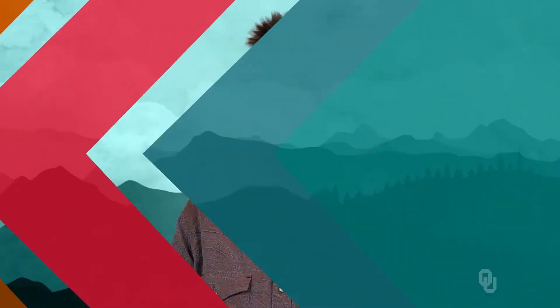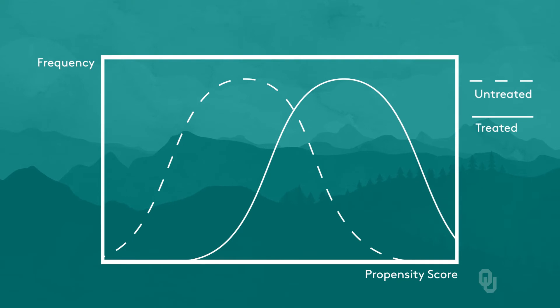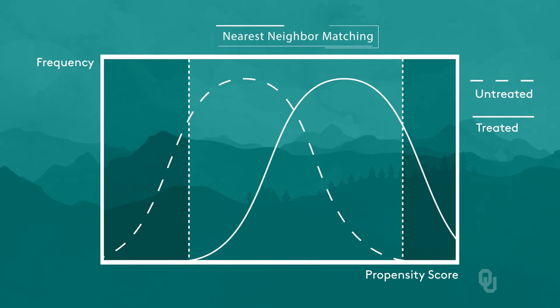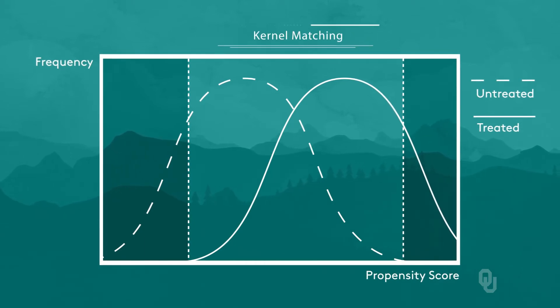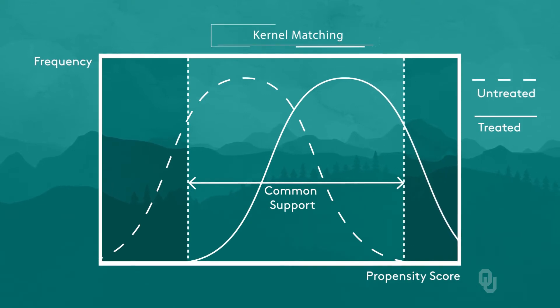We also need a method to determine the specific unit or units to match with each treated unit. Once the first-stage probability of policy adoption equation is estimated, to ensure that we get good matches, we restrict our analysis to the region of common support. By that I mean, if we graph the distributions of propensity scores for the treated and untreated units, we only use matching in the area where the two distributions overlap. In this region of overlap, we can use nearest neighbor matching, which takes as the control the non-treated unit with the closest estimated probability of adopting the policy. Or we could use kernel matching, which matches each treated unit with a weighted average of all the non-treated units in the region of common support. The further the non-treated unit's propensity score is from the treated unit being matched, the lower is the weight for that unit.